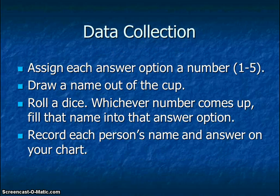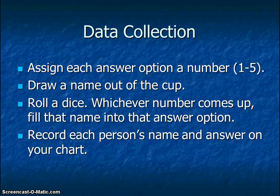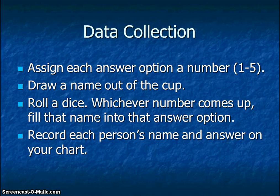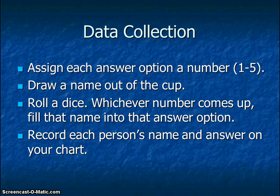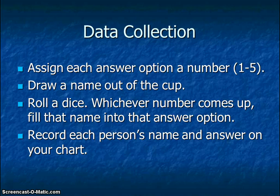Now that you have your question and your hypothesis, you are ready to collect data. Normally I would have the class all talk to each other, but not everybody's going to be doing this at the same time. So what you're going to do is — I have a cup with a whole bunch of names in it. You're going to take each of your five options and number them one through five. For every time you draw a name out of the cup, you're going to roll a dice. Whatever number comes up — one through five — you're going to put that person's name under that answer option. Of course, a dice has six numbers; if you get a six, just re-roll and pick a new number.